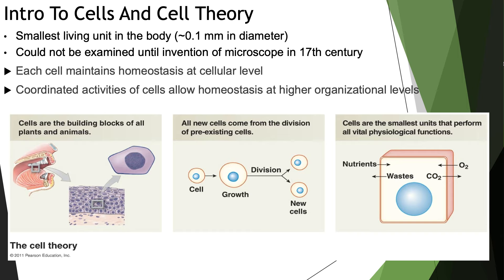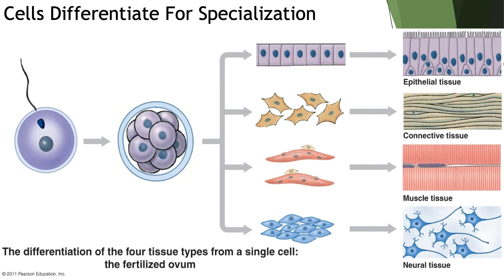Cells are the smallest living unit in the body and could not be examined until the invention of the microscope, obviously, because they are microscopic. Each cell maintains homeostasis at a cellular level — it maintains that homeostatic balance within the cell, which also creates a homeostatic balance outside of the cell. These coordinated activities of the cell allow homeostasis at higher organizational levels.